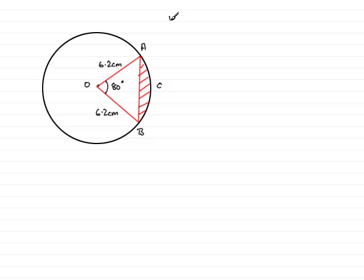Start by working out the area of OACB, the sector OACB. This sector is worked out by doing 80 over 360ths - that's the fraction of the complete area of the circle. So that is pi r squared, pi times 6.2 squared. If you use a calculator you should get 26.8361 and so on, centimeter squares.